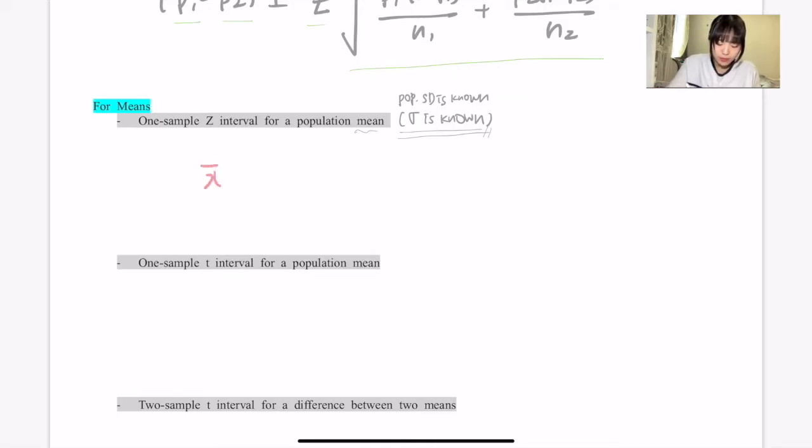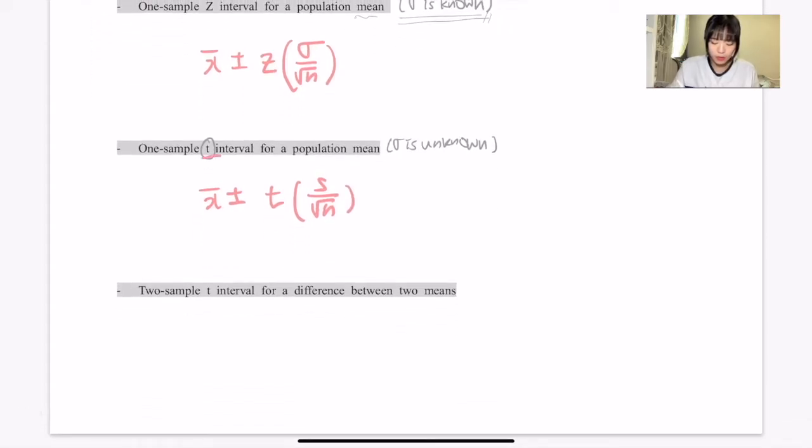You will have x̄ ± z(σ/√n). But when you're calculating the T interval, or when σ is unknown, you're going to use the T interval: x̄ ± t(s/√n).